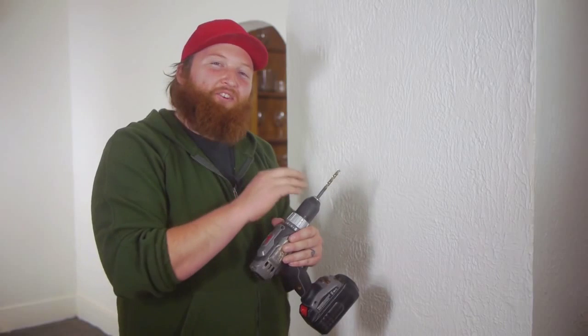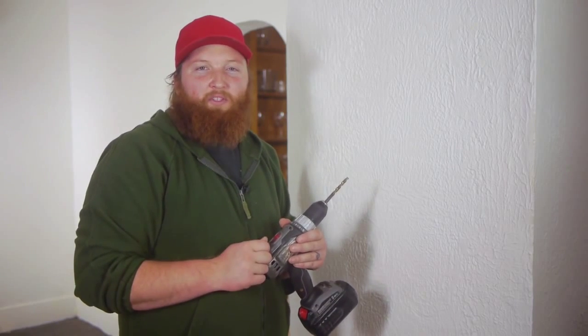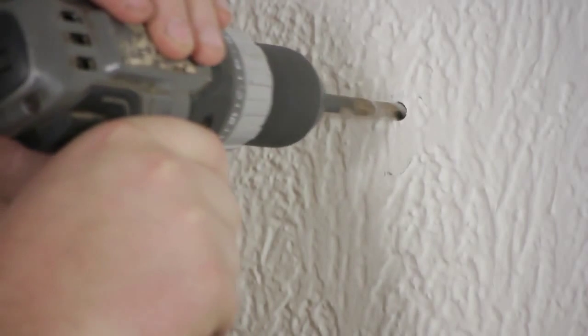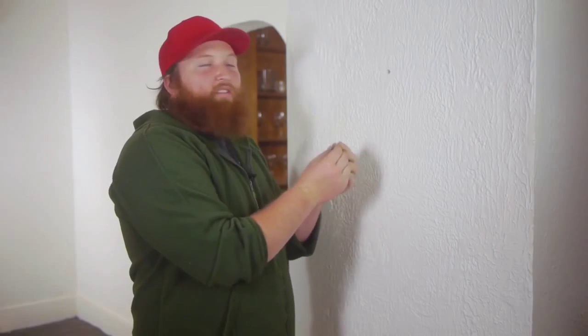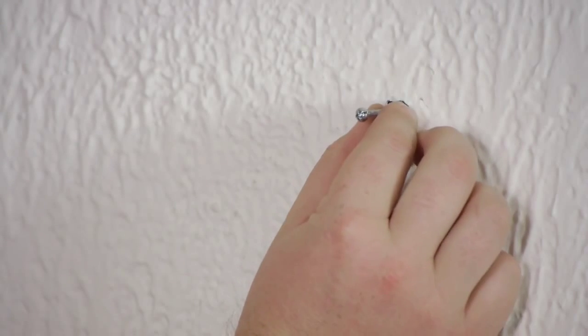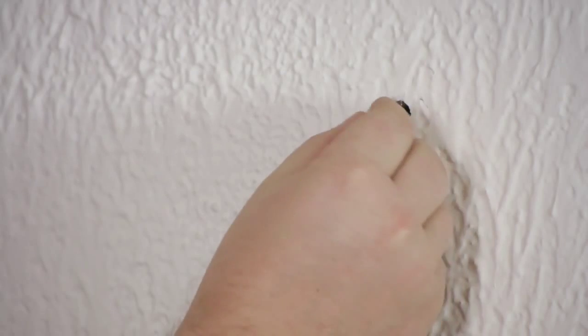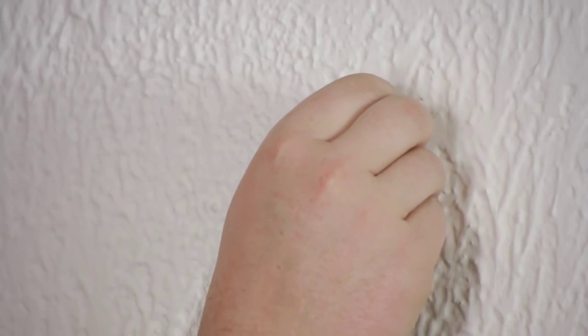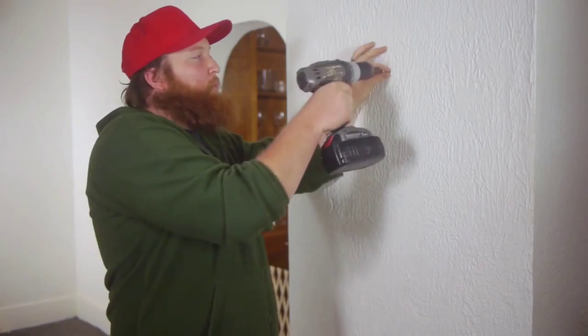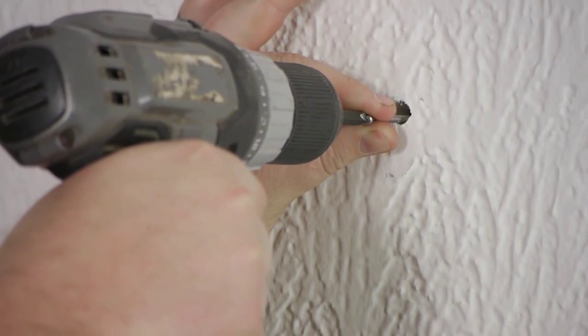First thing we need to do is go ahead and get our drill bit on there and drill out a hole where we want our toggle bolt to go. Next thing we're going to do is grab our toggle bolt, fold it in half, place it into the hole, and then push it in until you hear it click. After that, we're going to hold onto our bolt, apply a little bit of pressure out, and start drilling it in.